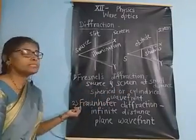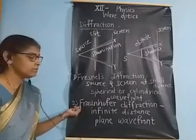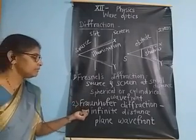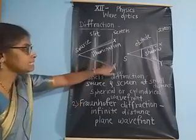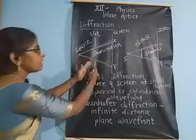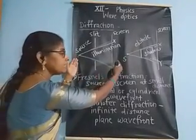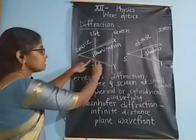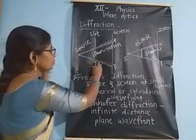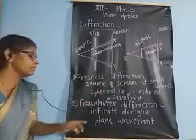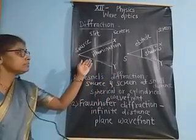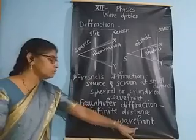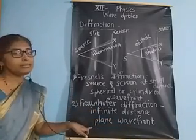The second type is Fraunhofer diffraction. In Fraunhofer diffraction, the source and the screen are at an infinite or very large distance from the slit. Here a plane wavefront is incident on the slit.